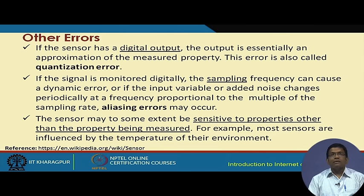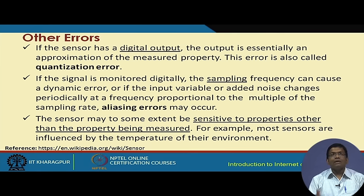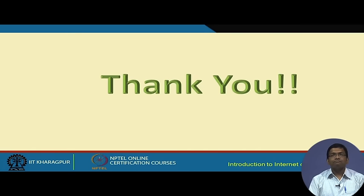Sensors may sometimes also be sensitive to properties other than the one being measured. For example, a temperature sensor might at times also be sensitive to humidity, pressure, or light. This means the sensor can get affected by physical properties not directly being measured, leading to some additional error.